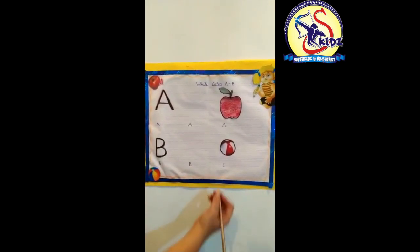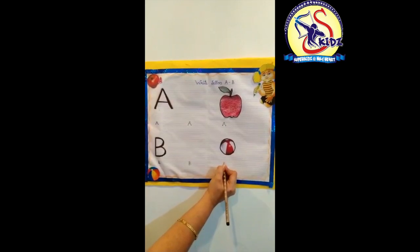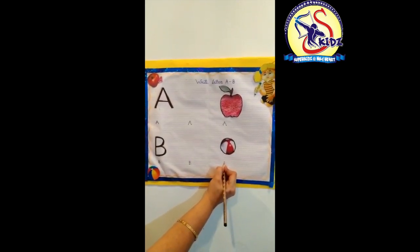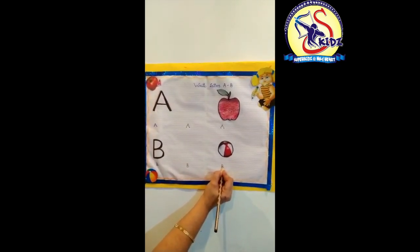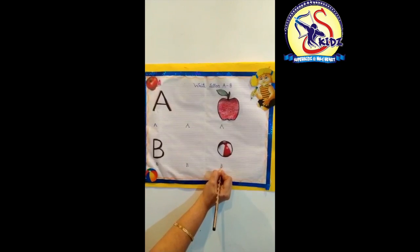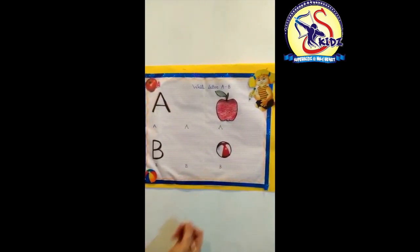Let's revise. How to make letter B? Make a standing line. Then make a curve. And again another curve. So this is letter B.